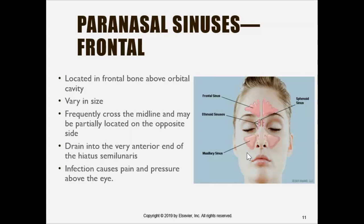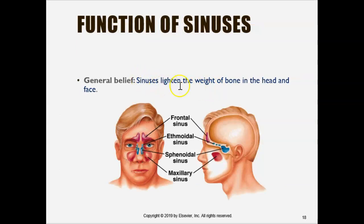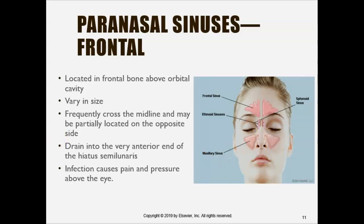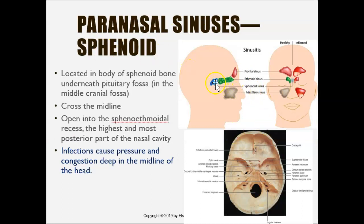Sinuses lighten the weight of the bone in the head and face, so our head doesn't feel as heavy. We have four types: the frontal sinus, ethmoid sinus, sphenoid sinus — which is further deeper in the skull — and the maxillary sinus, which is near the maxillary bone.